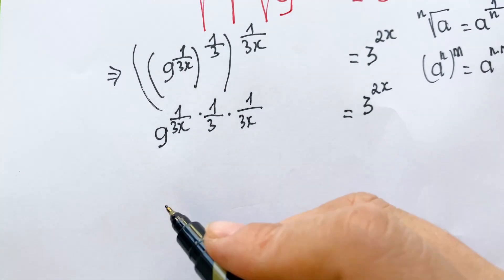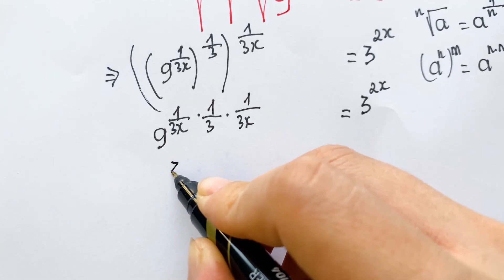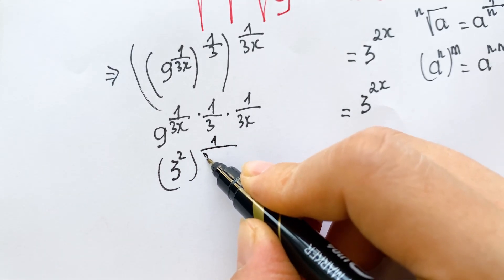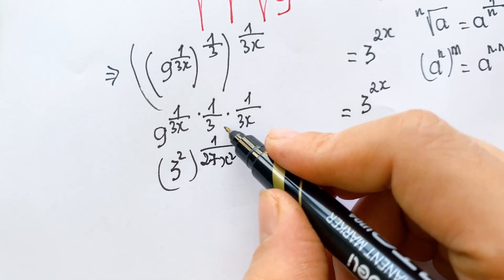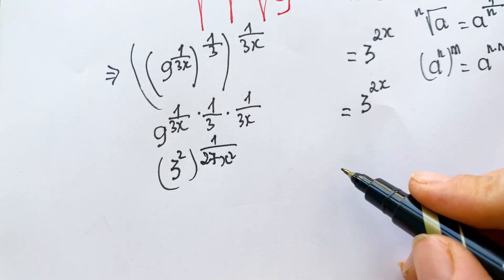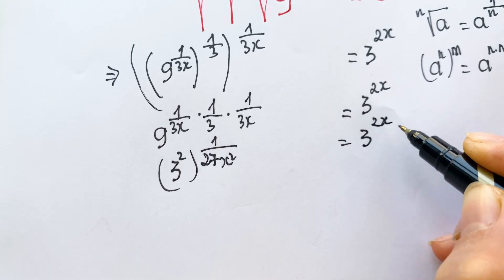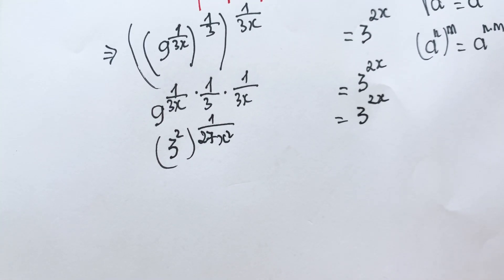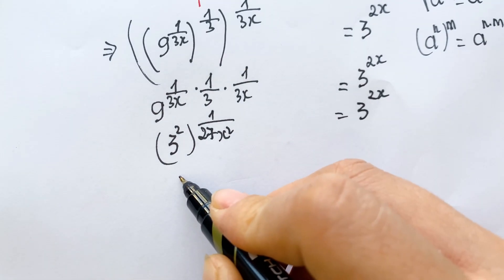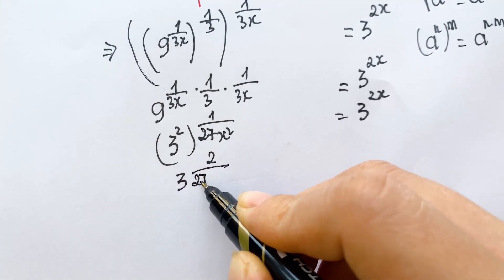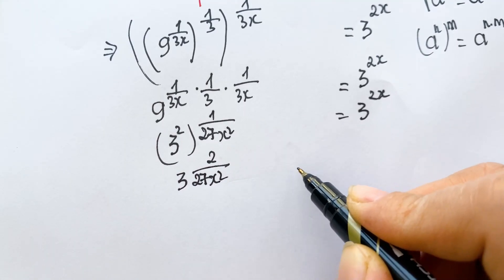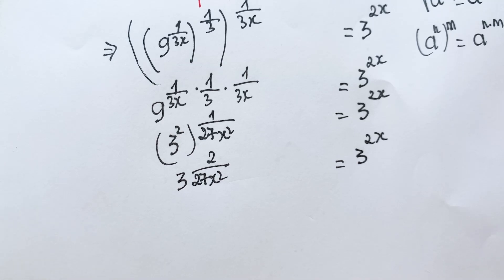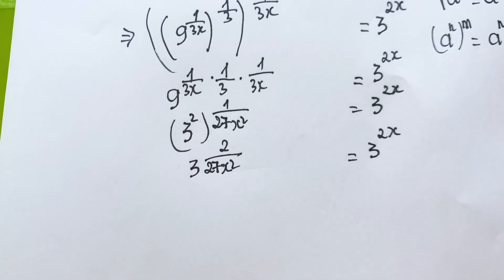Next, we can write nine as three squared and twenty-seven as three cubed. So we have twenty-seven to the power one over twenty-seven x squared, times the numbers and variable, which is equal to three to the power three times two x. We also have three to the power twenty-seven x squared equal to three to the power two x.